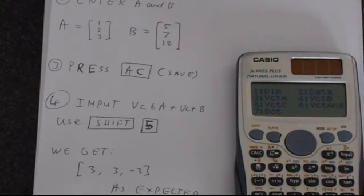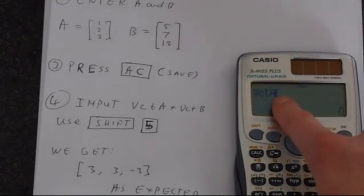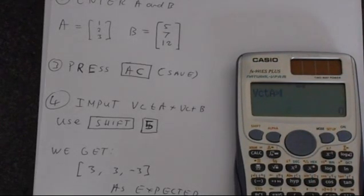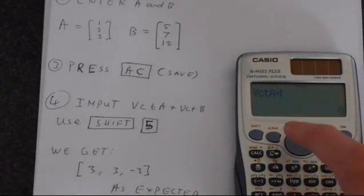So we can access vector A by pressing number 3. That puts vector A here. And then we want times. That's the symbol for a cross product in this case.